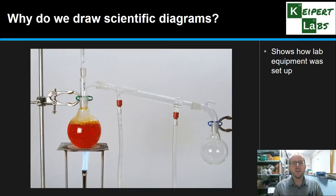So essentially the diagram shows how lab equipment was set up. This is a relatively complicated example called distillation. You can see that there's lots of different bits and pieces and you can't even see all of them in this photo. But being able to draw a diagram that simply and easily captures what was set up and where makes a huge difference.